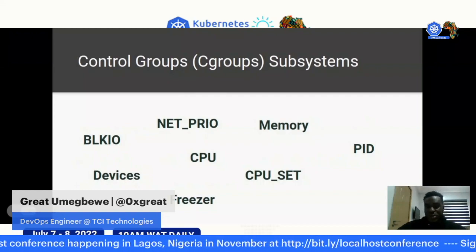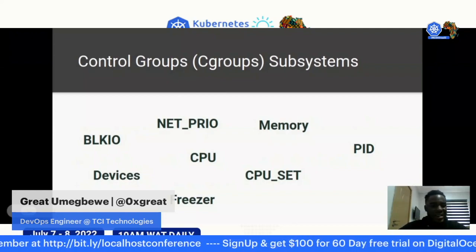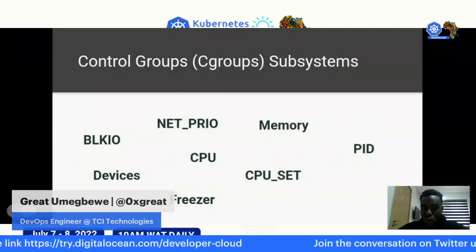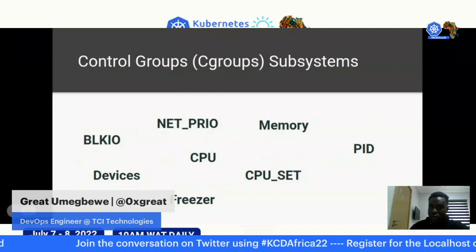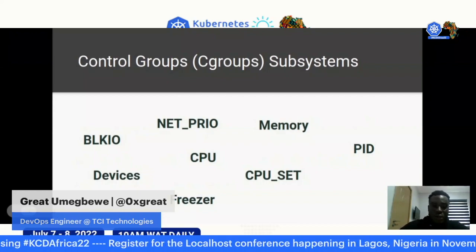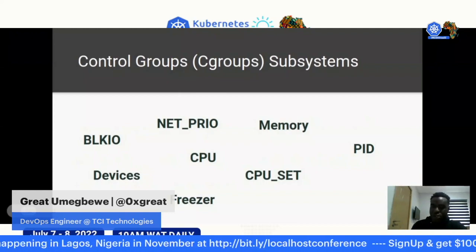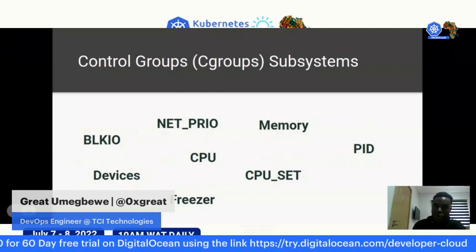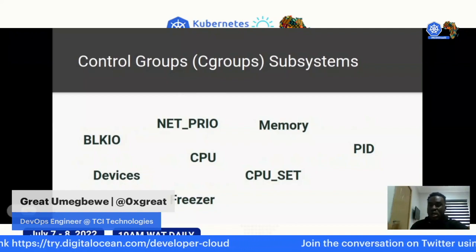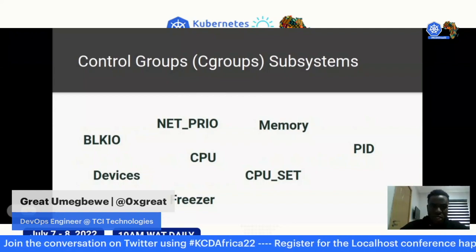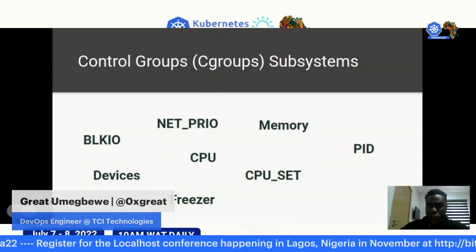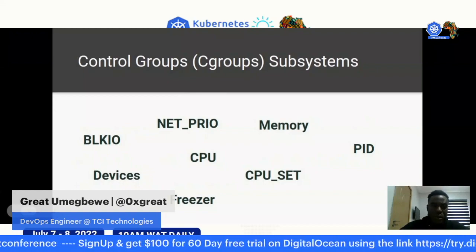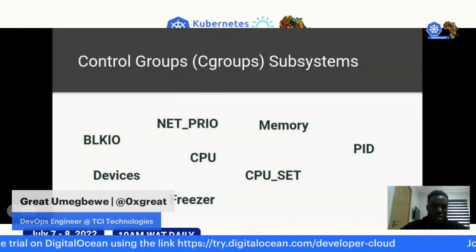Control groups — cgroups — is a special mechanism provided by the Linux kernel that allows us to allocate resources like CPU, memory, devices, and network to a group of processes. Since containers run as processes, cgroups enables us to limit memory to a container, limit CPU to a container, and so on. Cgroups were originally built as a security feature — actually built as a honeypot for attackers.